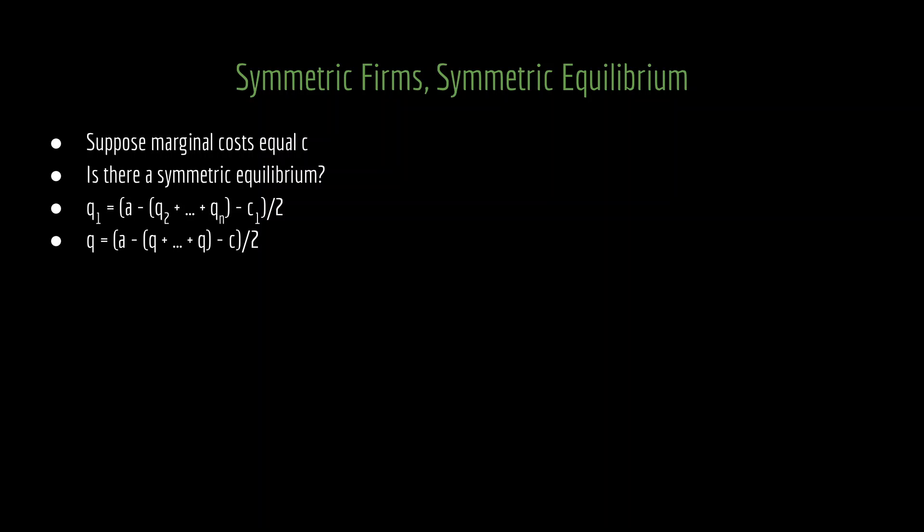Well, this is a single equation with a single unknown variable. You'll notice that inside of the parentheses, we have n minus one total values of q. And once you recognize that, we can just solve for q. And we get q as equal to (a minus c) divided by (n plus one). So in the symmetric equilibrium, where we have symmetric firms, each firm produces (a minus c) divided by (n plus one).